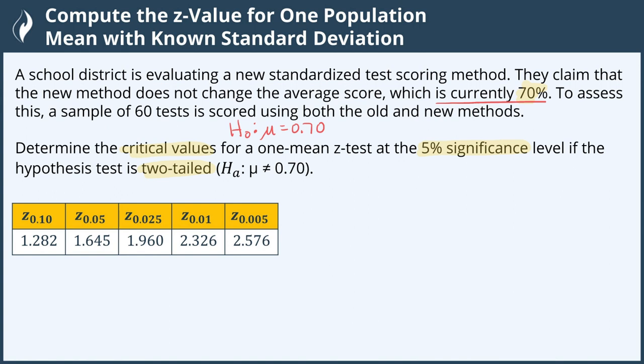The alternative hypothesis is what determines our type of tail test, and where the mean is not equal to 0.7. This means that there's two ways to not be equal.